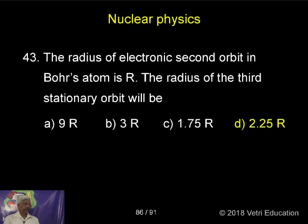The radius of electronic second orbit in Bohr's atom is capital R. The radius of the third stationary orbit will be 2.25 into R.